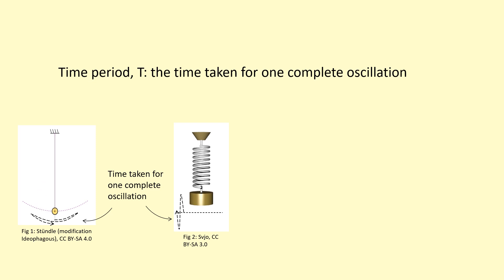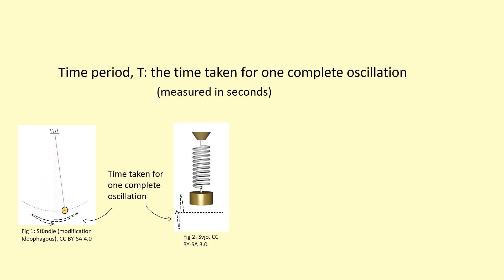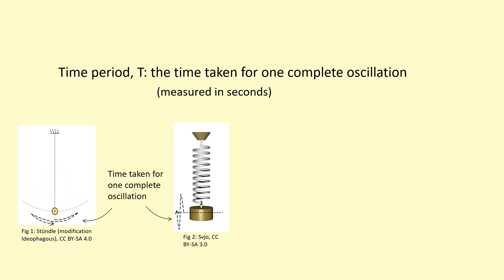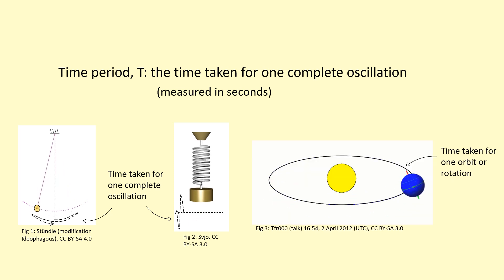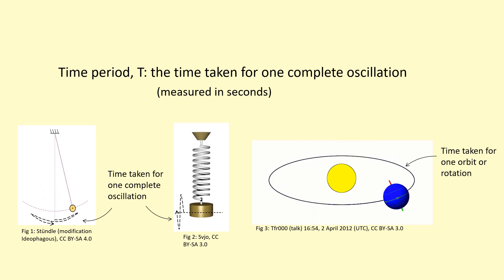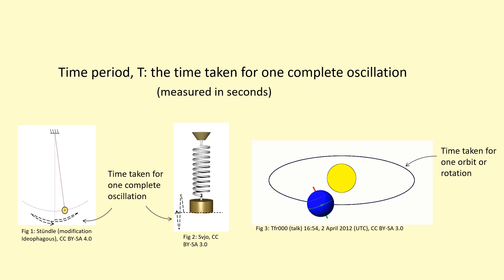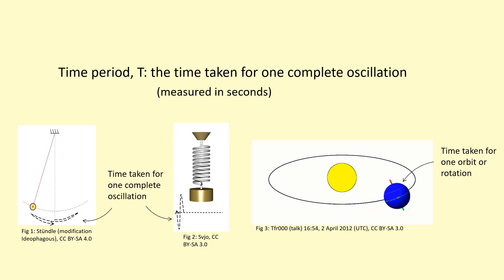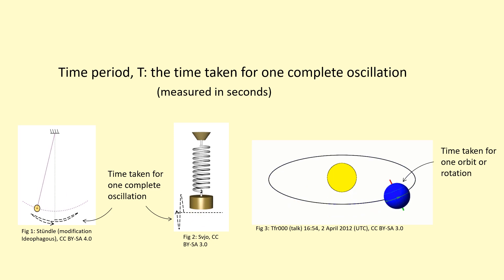One time period is the time it takes to complete one whole oscillation, and normally it's measured in seconds. It doesn't even have to be something oscillating — it could be something orbiting or doing circular motion. For example, Earth takes 365 days to go around the sun, so that's the time period of its orbit. When rotating on its own axis it takes 24 hours, so that's the time period for its rotation.